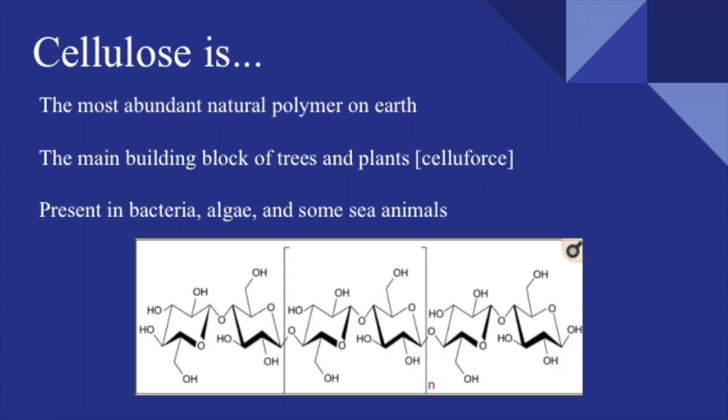What is cellulose, you may ask? Cellulose is the most abundant natural polymer on Earth and is the main building block of trees and plants. It is present in bacteria, algae, and some sea animals. The figure below illustrates the chemical composition of cellulose.